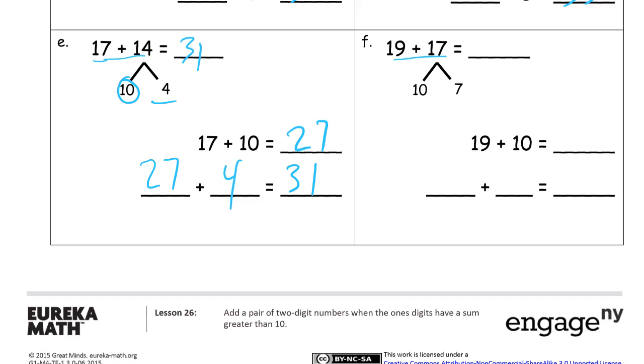And for this one here, let's add the 10 first. That's the 10. 29. And then add the 7. 29 plus 7, 36.